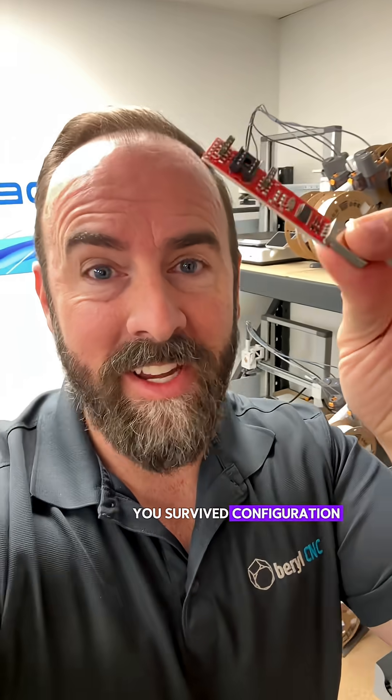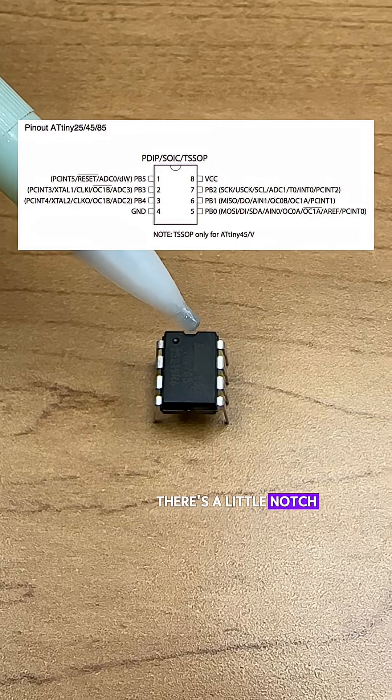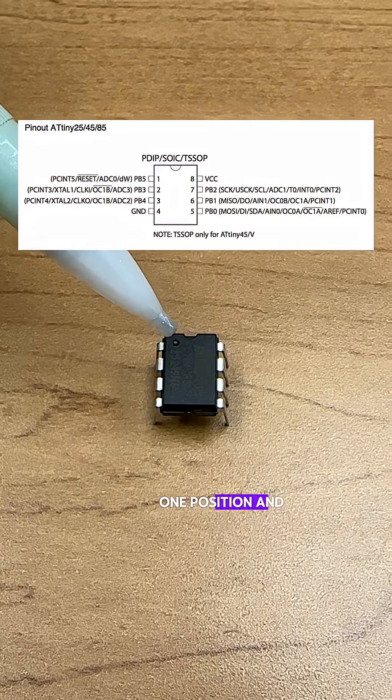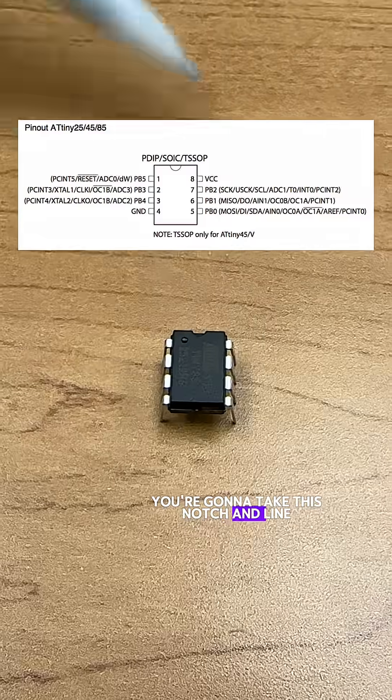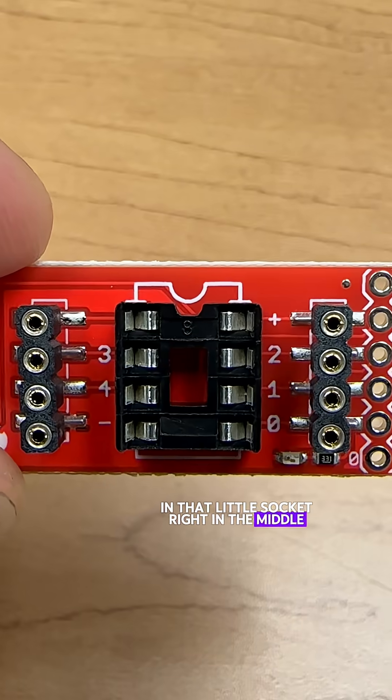You survived configuration. Now we're getting to the hands-on fun part. The top of the microcontroller has a little notch, and to the left is the pin one position. It has a little dot next to it. You're going to take this notch and line it up with the silkscreen notch in that little socket right in the middle. Now you have to push this chip into that socket, but notice that these pins are flexed a little bit.